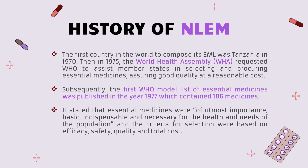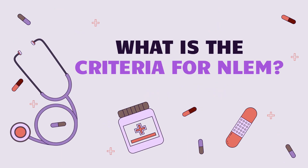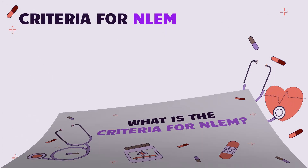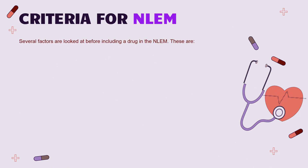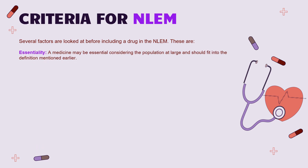Now let's understand the criteria for a National List of Essential Medicines. When it comes to criteria for the national list, there are several critical factors before you declare a drug in that list. The first factor is essentiality — a medicine should be essential considering the population of that country and how it fits the needs and requirements of that country.